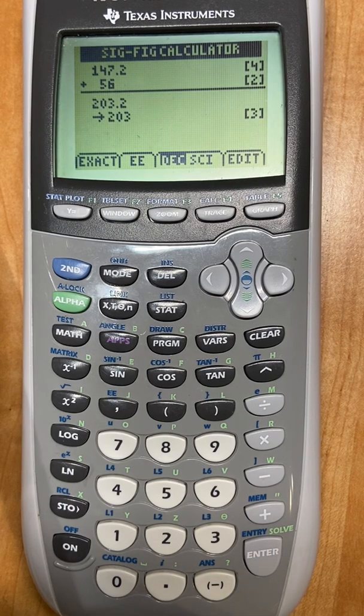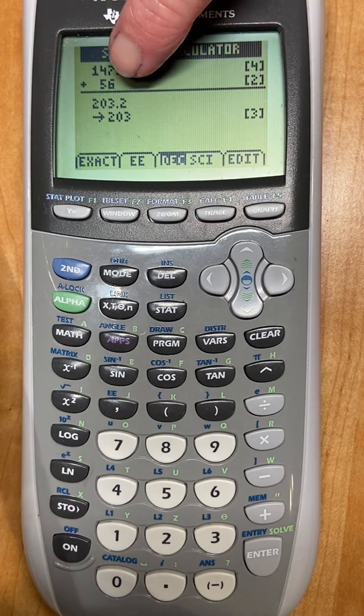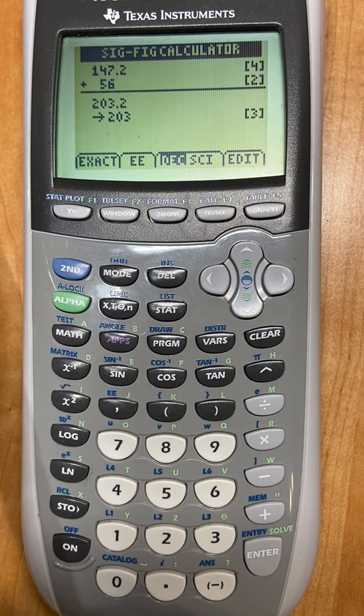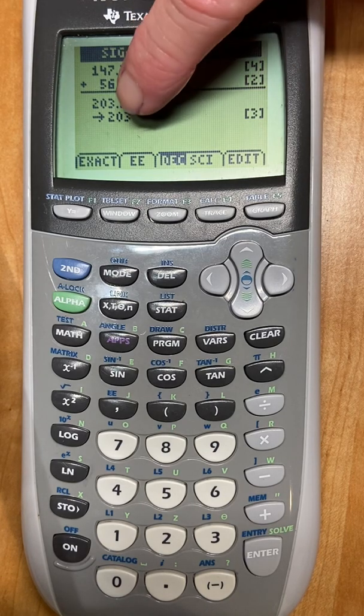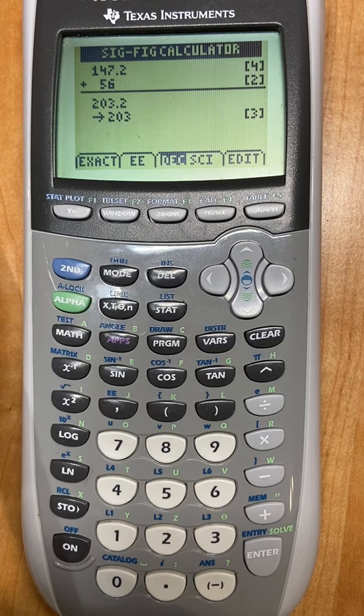There's the answer, 203.2, but the least precise, even though it has 2 SIG-FIGs, it's not like multiplying and dividing, your answer will be 203. It will be rounded to the least precise.